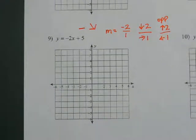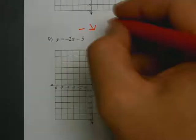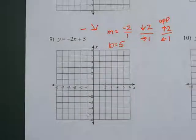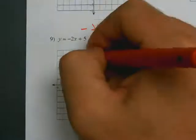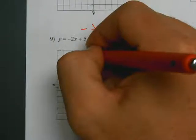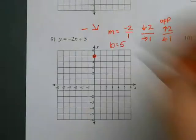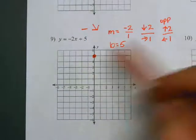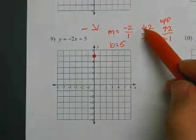From there, we find b. b is 5, so we put a point at 5. And now from your b, from your y-intercept, follow your direction: down 2 and right 1.